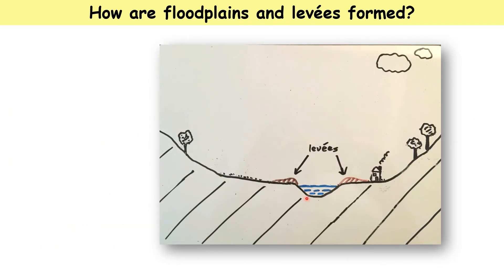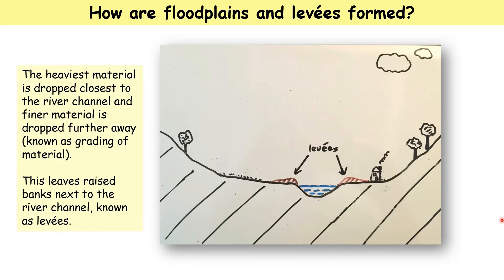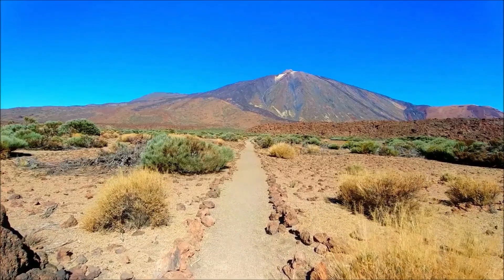Over time, we get large mounds of material being left right beside the river. The largest items of sediment will be dropped right next to the river, and then smaller items will be dropped further away because they can be carried further from the river. So the heaviest material is dropped closest to the river channel, and the finest material is dropped further away. This leaves a grading of material — largest here, smallest at the edge — and that means we're left with these raised banks next to the river, which are known as levees. Thank you for joining us.